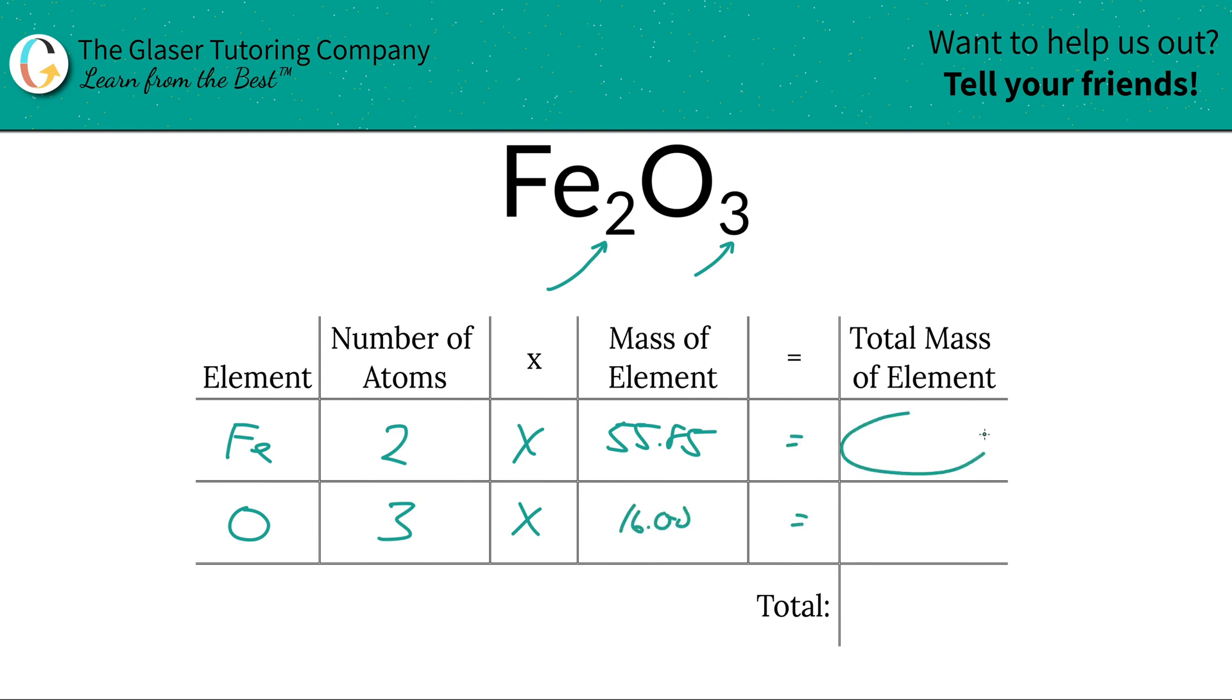So now to find the total mass of the element in the compound, we just simply multiply the mass by the number of atoms. And for iron here, we're going to get a total of 111.70. The total then for oxygen, 16 times 3, is going to be roughly 48. Not roughly, well it's exactly 48, but you know, who's keeping track?